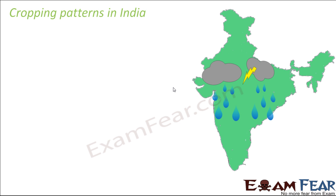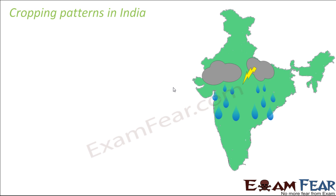The rainy season lasts from around July to September. This monsoon is in turn followed by winter, and the period between monsoon and winter is autumn — the period after summer and before winter — which lasts almost till December.